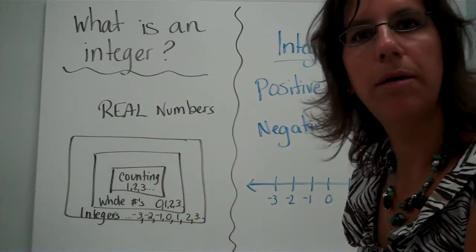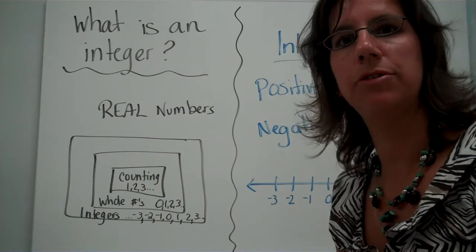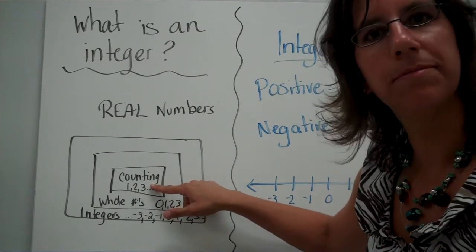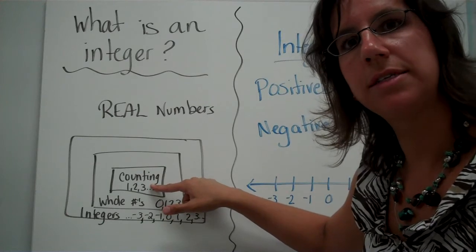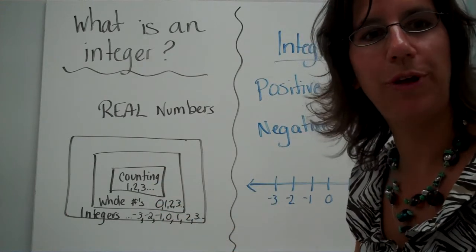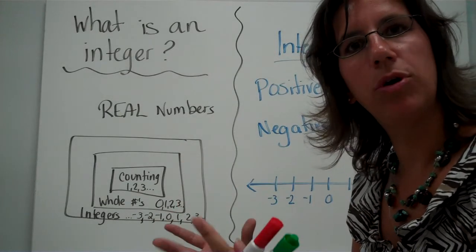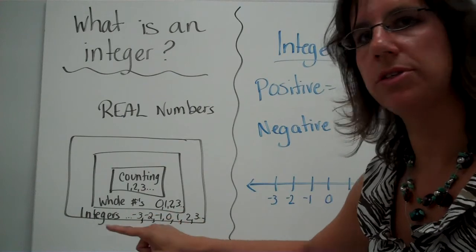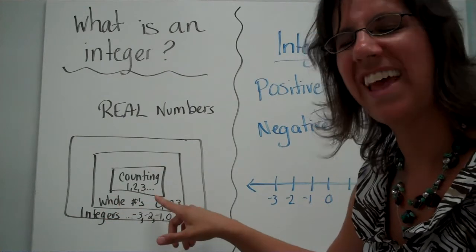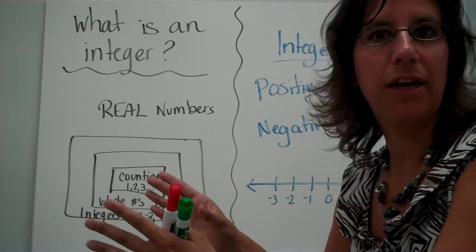Here are real numbers. Part of real numbers — remember when you were in kindergarten and you just counted one, two, three, four? Those were counting numbers. Then when you got to higher grades, they gave you also the zero: zero, one, two, three, four. So they made those numbers a little bit more broad — those are called whole numbers. Notice whole has an O in there — O for zero. They added the zero.